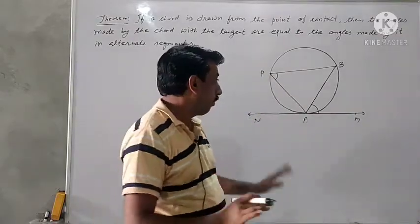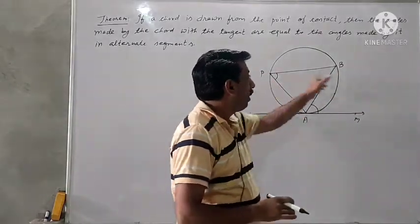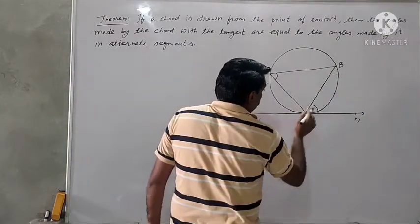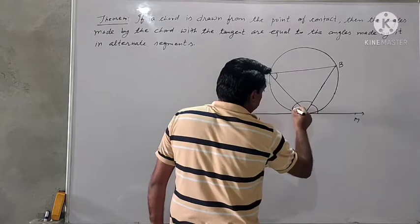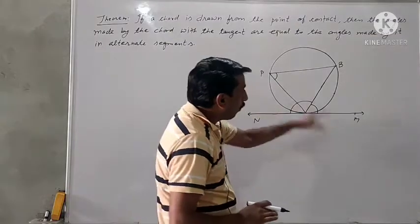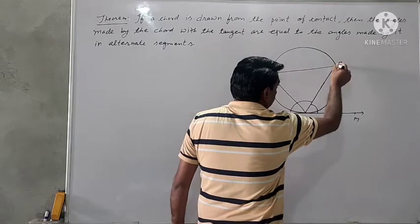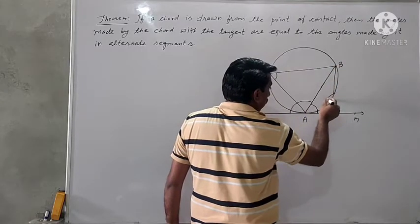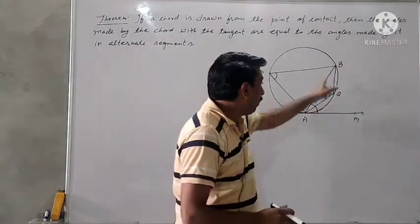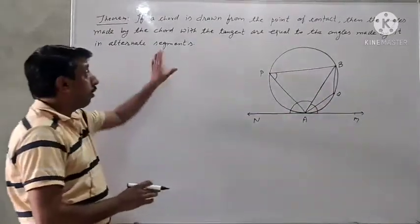The point of contact is A. The angle BAM is to be put equal to angle APB. The angle BAN is the angle made by this chord with the tangent in the other direction, and this angle will be equal to the angle made by this chord at a point on the minor segment. Let this point be Q. We have to show that angle BAN is equal to angle AQB. This is the statement of the theorem.